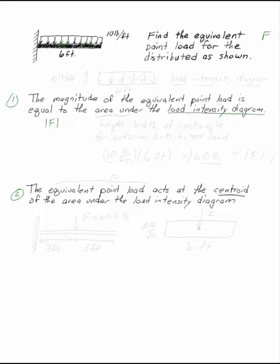Well, the load intensity diagram is this shape with the arrows in it. So, my shape here is a nice rectangle. This is my load intensity diagram. The load intensity diagram here has a height equal to 10 pounds per foot and a width of 6 feet.